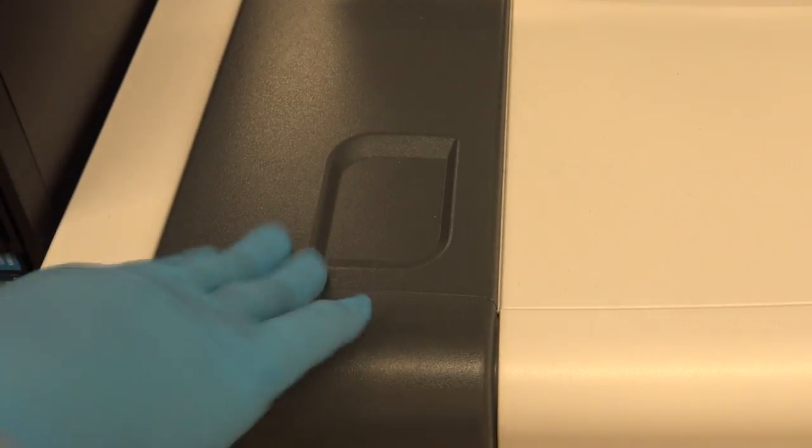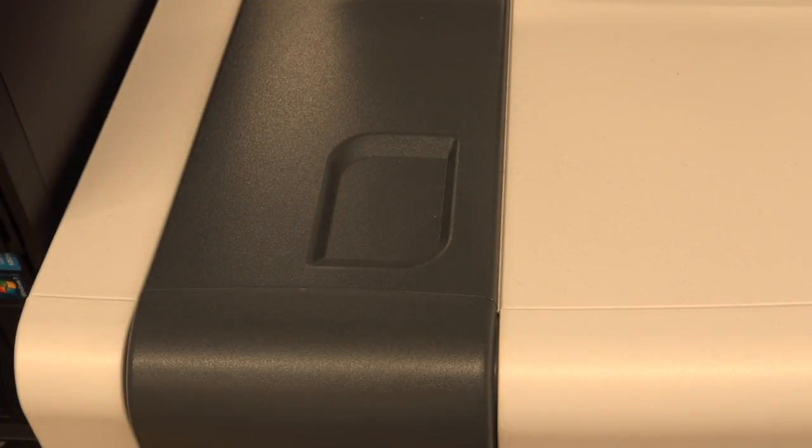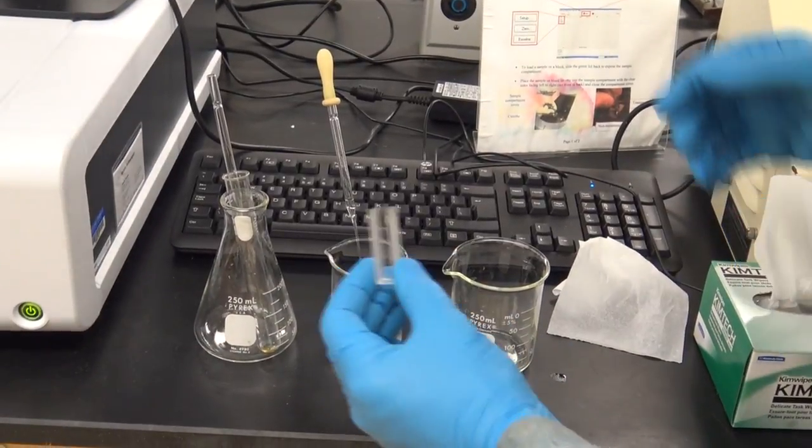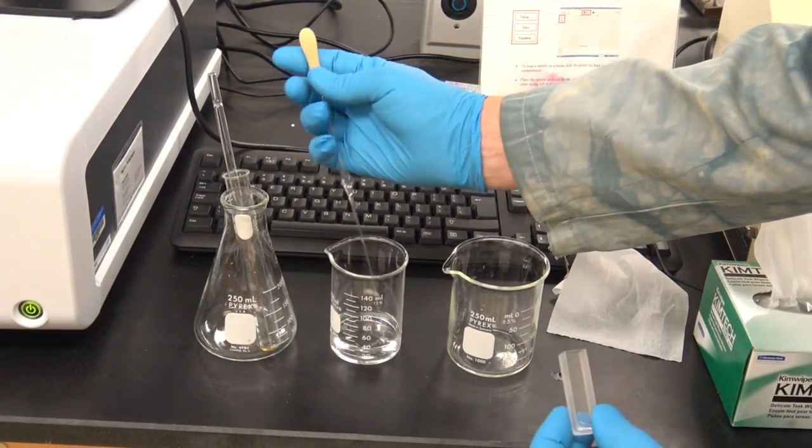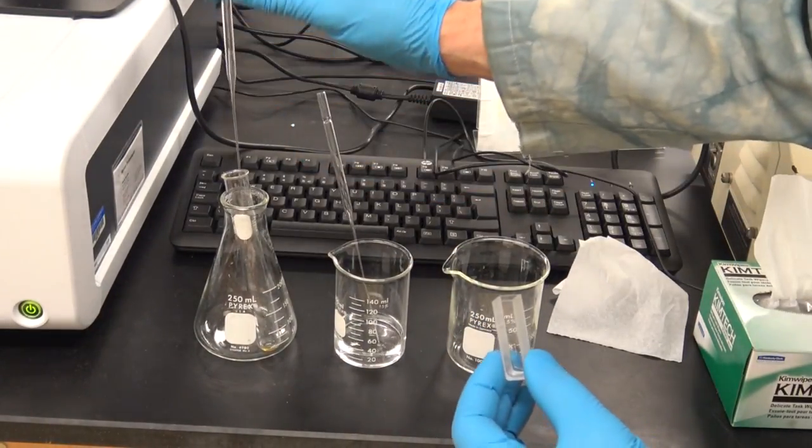Now, we will remove that blank and we're ready to empty our cuvette, reload our new test solution, and get our spectrum. Let's prepare our sample so that we can collect a spectrum. To prepare the sample, we'll take our cuvette and, of course, pour out the blank solution.